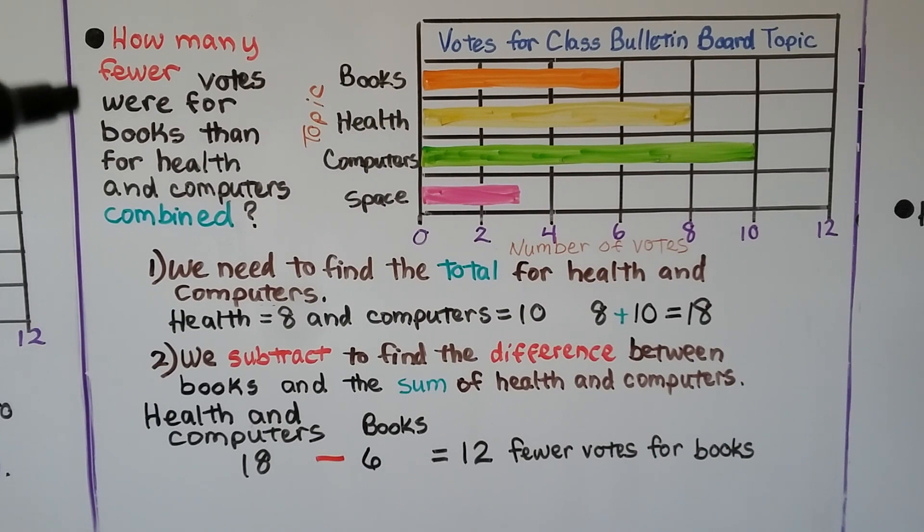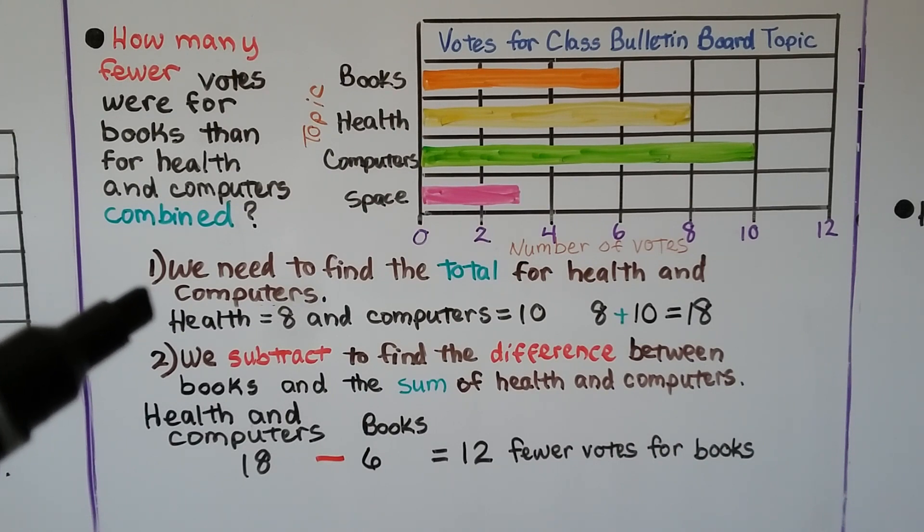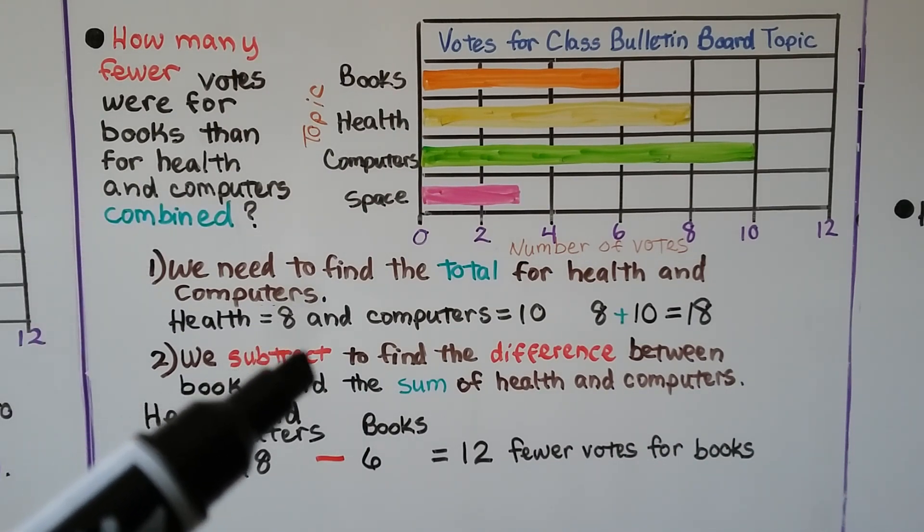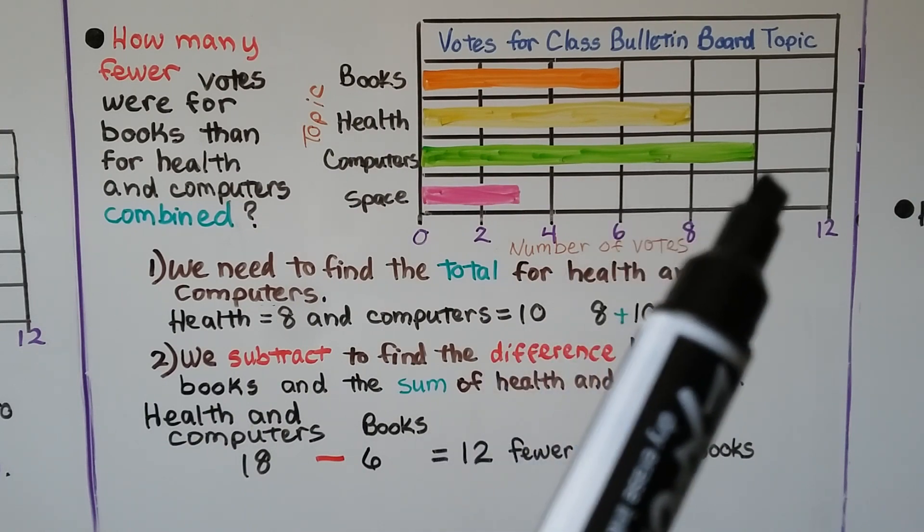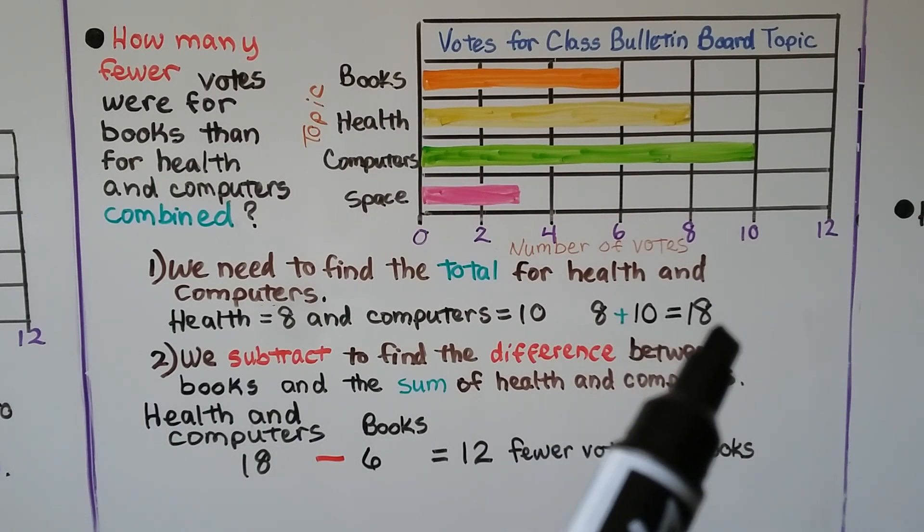How many fewer votes were for books than for health and computers combined? The first thing we need to do is find the total for health and computers. It wants health and computers combined. Health is eight, computers is ten. We add them: 8 + 10 = 18.